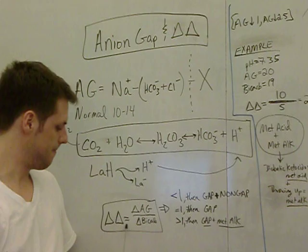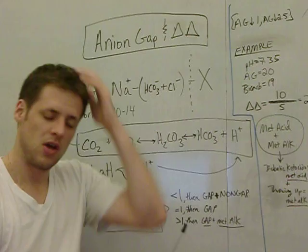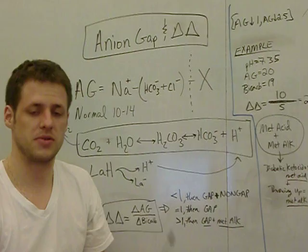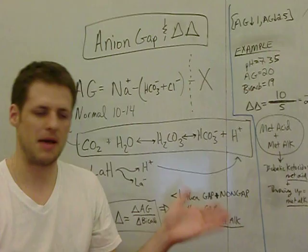A delta-delta is calculating the delta anion gap divided by the delta bicarb. And so what do we mean by delta? All we mean is change from the normal value. So think of anion gap as being a normal value of 10 to 14. Some say 8 to 12, 8 to 14, 8 to 15. I like to think of it as just 10. Anion gap of 10 is pretty normal.